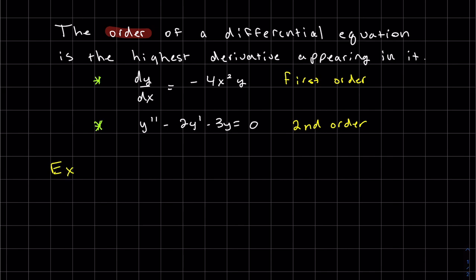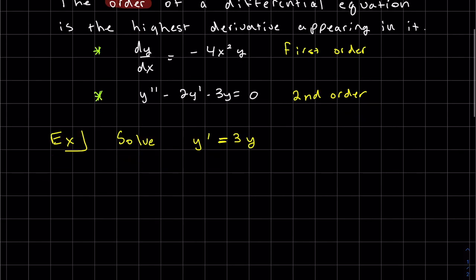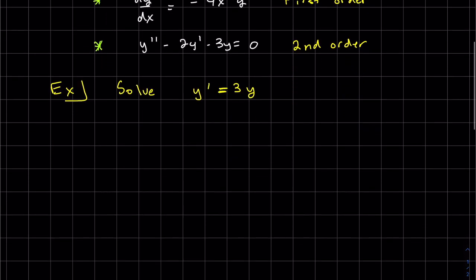Let's do an example. We're going to use separation to solve this, because this is separable. So y prime, we can rewrite it as dy/dx. Then we separate all the y's on one side, x's on the other, and we actually separate the dy dx.